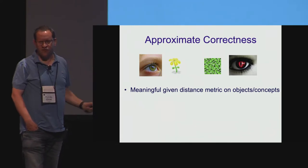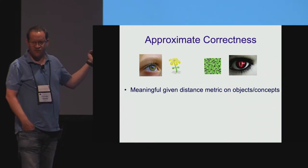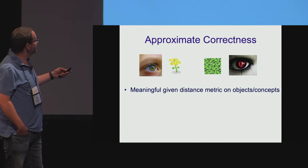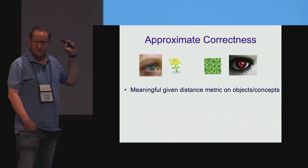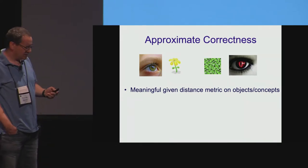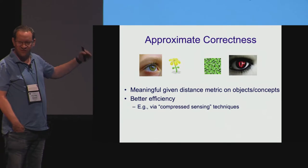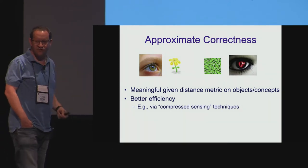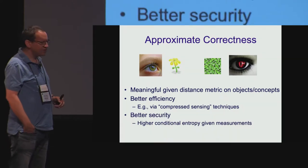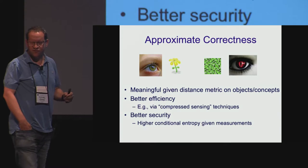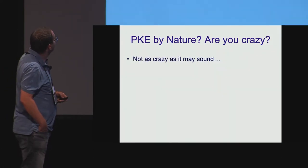Another useful relaxation is to settle for some form of approximate correctness. So instead of getting the exact picture of the object, we may be willing to get a slightly blurry version of the object with respect to some metric. We still insist that the adversary doesn't get any signal. In a cryptographic context, the main advantage of this is to get better security by substantially reducing the entropic requirements. So if we get the weaker signal, there is more conditional entropy in the object.